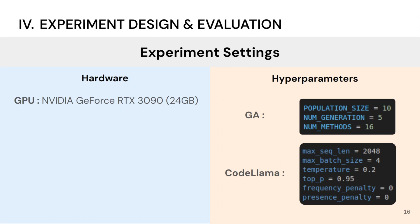On the right are some hyperparameters used for our genetic algorithm as well as LLM model. The reason for choosing only a population size of 10 and 5 generations and 16 methods to run on is because of limited time and resources.